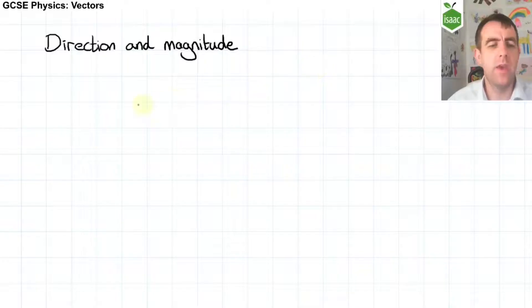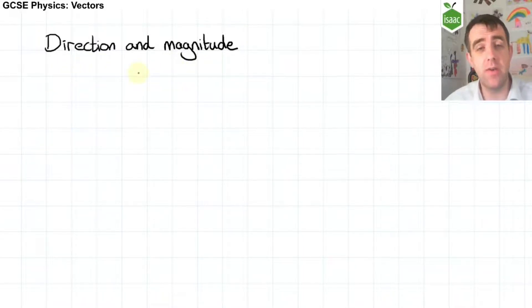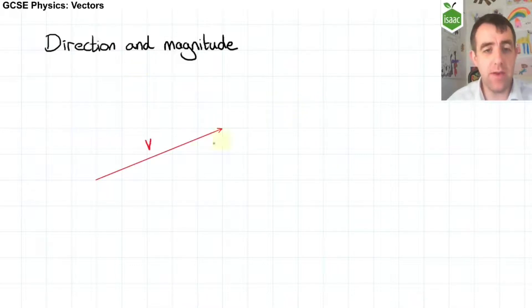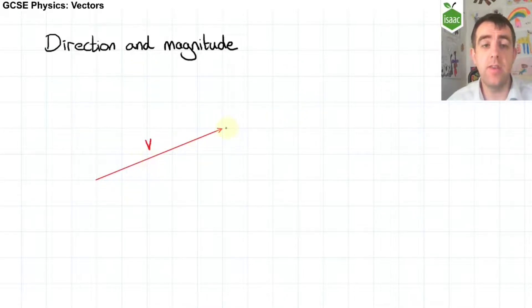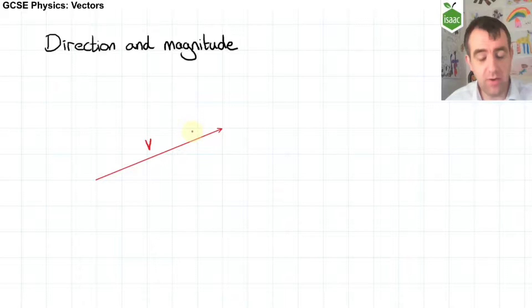This video is about vectors. A vector is a quantity with a direction and a magnitude, and at GCSE level the direction can become very important. We can represent vectors graphically using an arrow. The length of the arrow is the magnitude of the vector — that's the size of the vector — and the direction of the arrow is the direction of the vector.